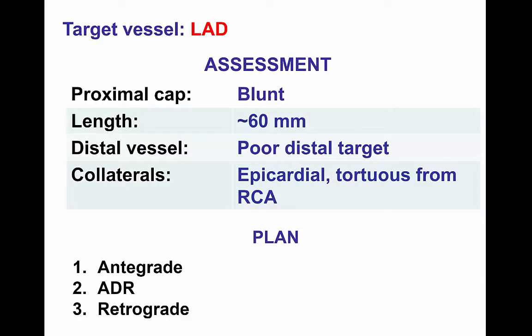There was a discussion about the sequence of revascularization attempts with PCI — whether the right coronary, the LAD, or the circumflex should be performed first. The consensus was that the LAD represented probably the largest myocardial territory and should be done first. Looking at the four characteristics assessed in every CTO: this was a case with a blunt proximal cap, the length appeared long at about 60 millimeters, the distal vessel was poor, and collaterals were epicardial from the right coronary artery — not particularly suitable for retrograde approach.